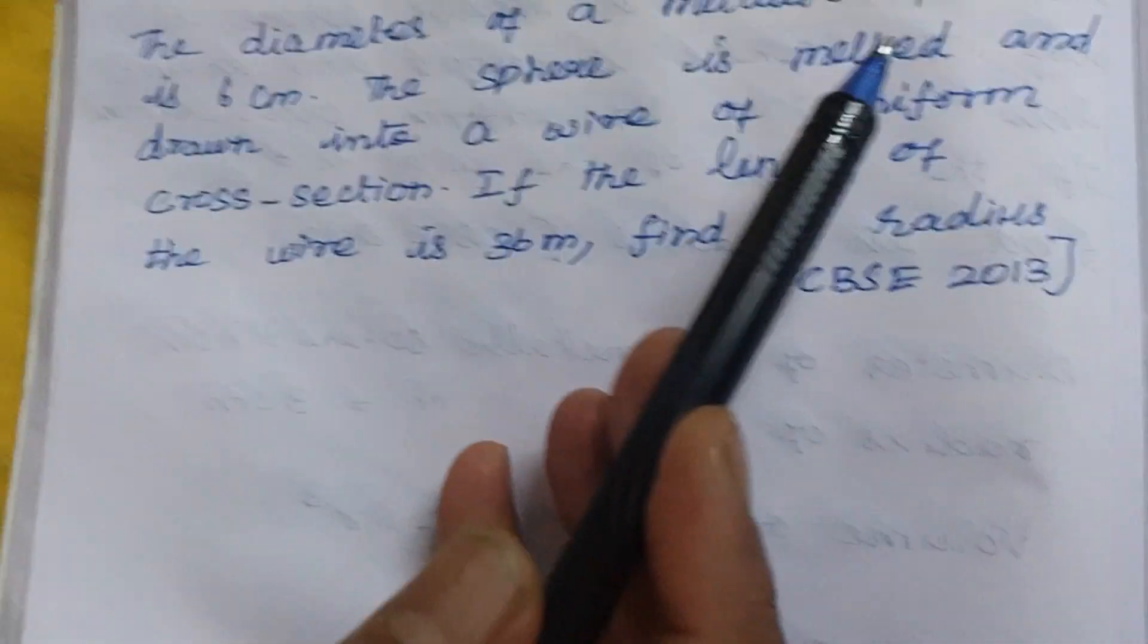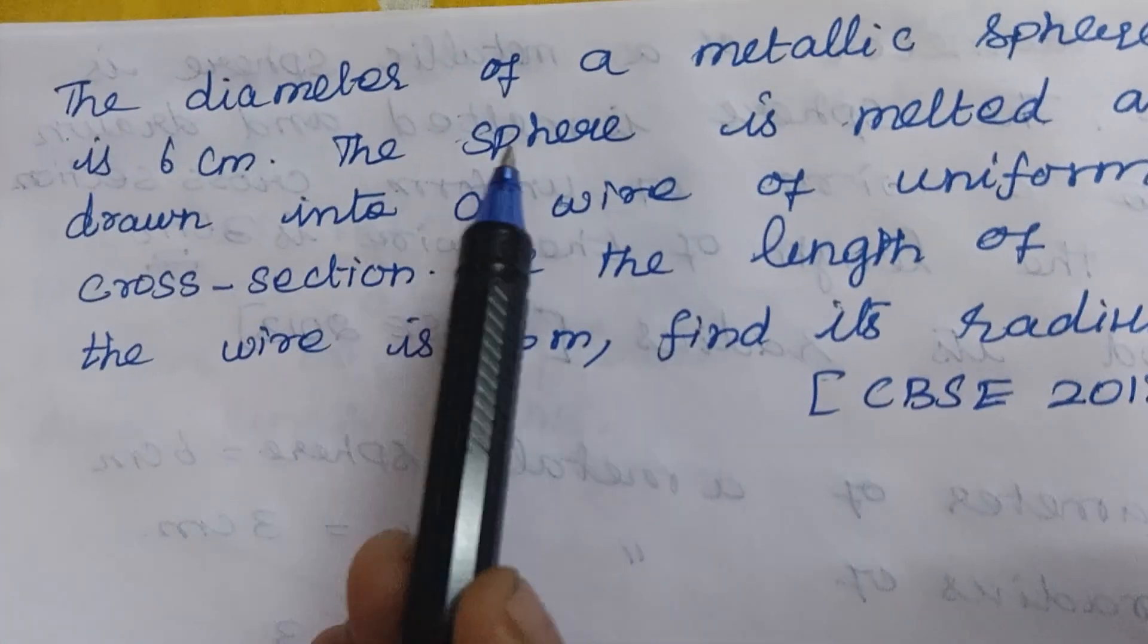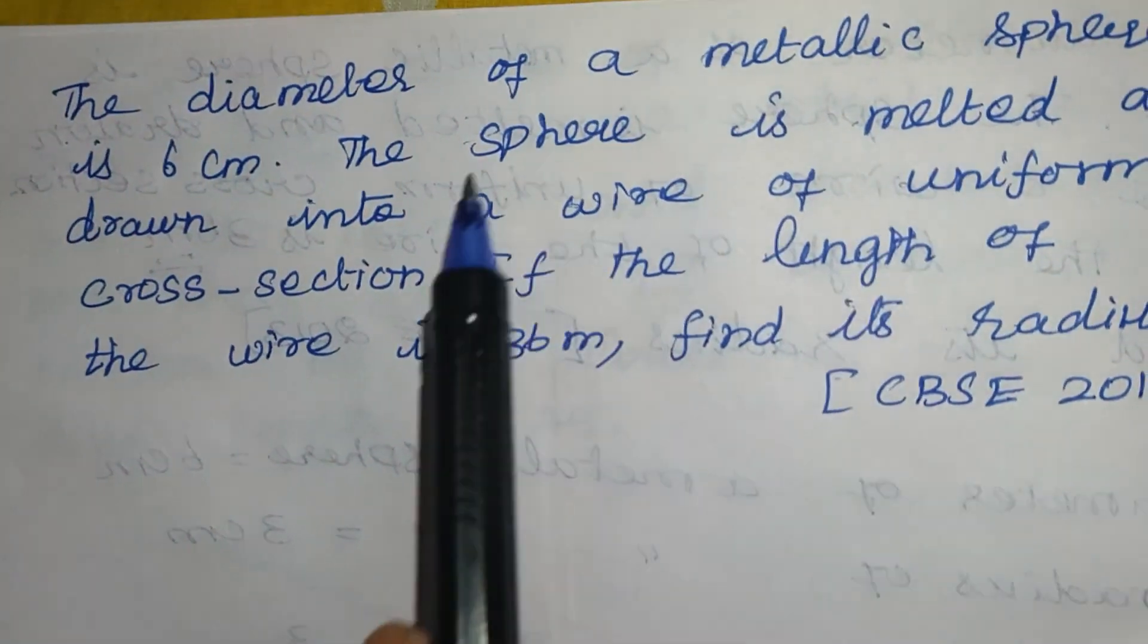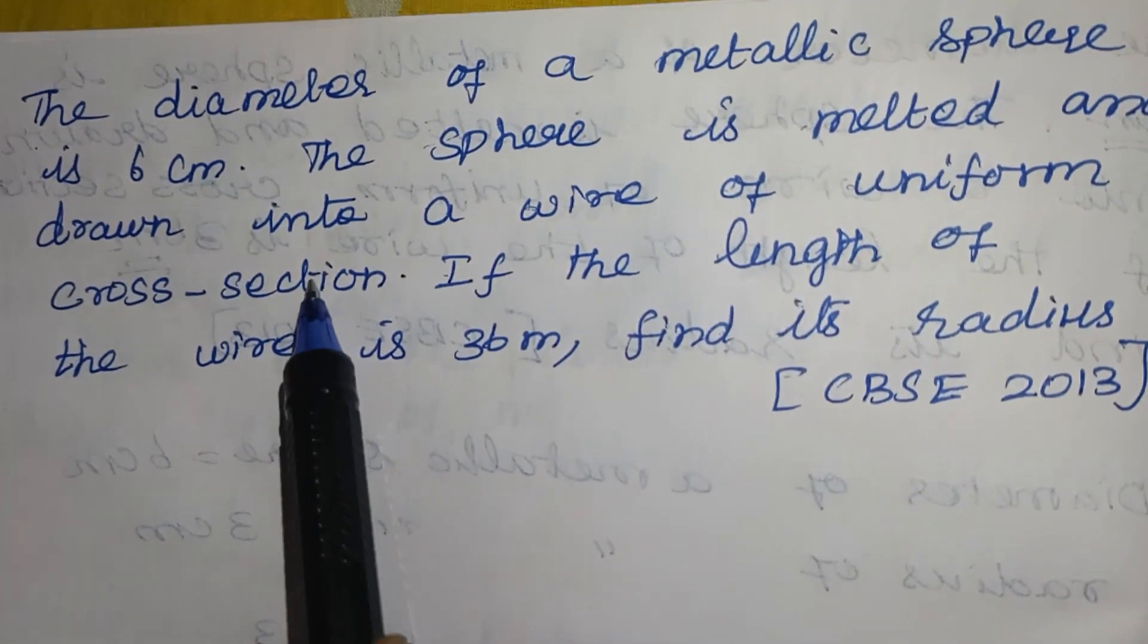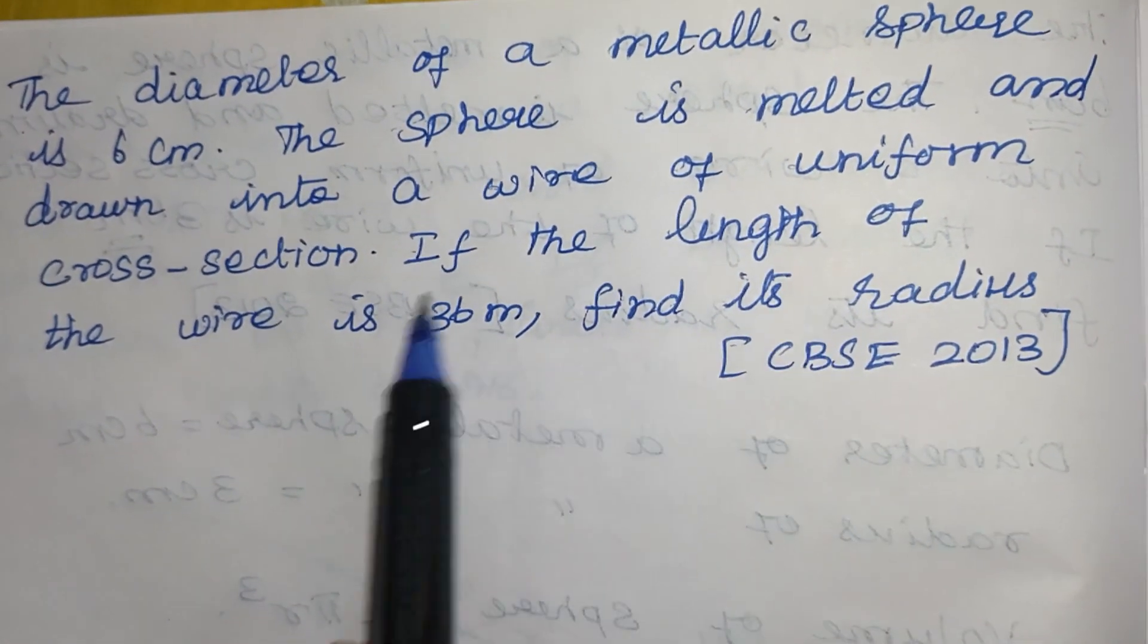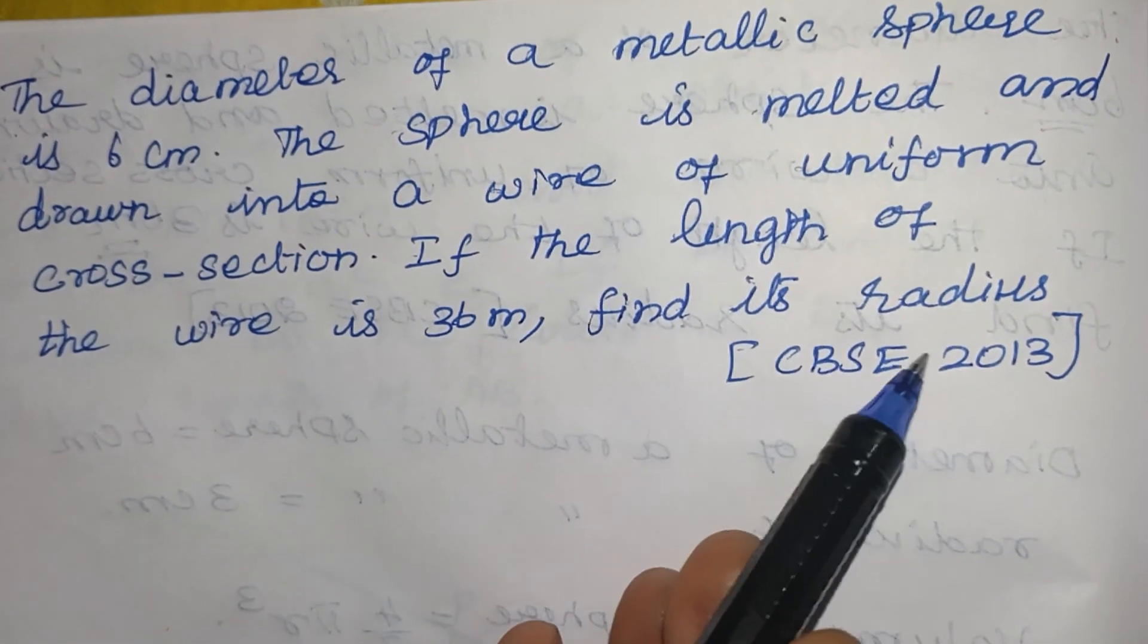The diameter of a metallic sphere is 6 cm. The sphere is melted and drawn into a wire of uniform cross section. If the length of the wire is 36 m, find its radius.